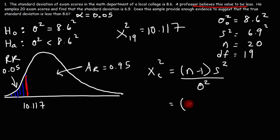So n minus 1, that's 20 minus 1, times s-squared, which is 6.9 squared, over sigma-squared, which is 8.6 squared. 19 times 6.9 squared divided by 8.6 squared gives us 12.23.